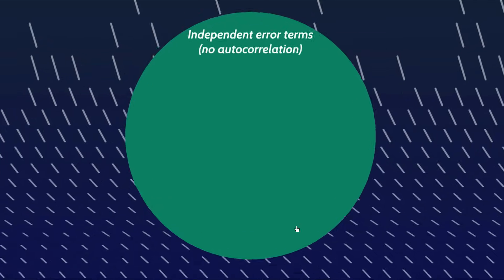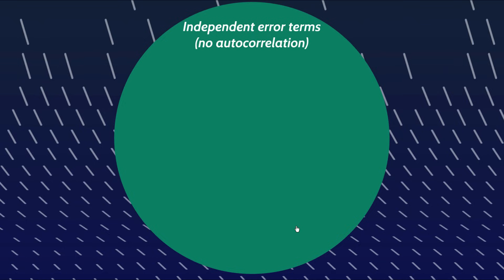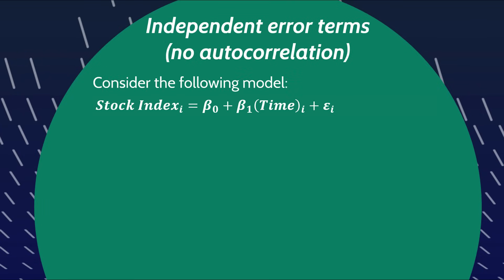Let's have a look at independent error terms. You might have heard the term autocorrelation or serial correlation — that would represent a violation of the independence of error terms. Something to note about autocorrelation is that it's a violation that can only occur in time series data — there needs to be some kind of order to your x variable. If you have cross-sectional data like a survey, you don't need to worry about autocorrelation because there's no natural order to your x variable. However, if you're mapping out a long-term trend of a stock index with time as the x variable, this is where autocorrelation could be a problem.